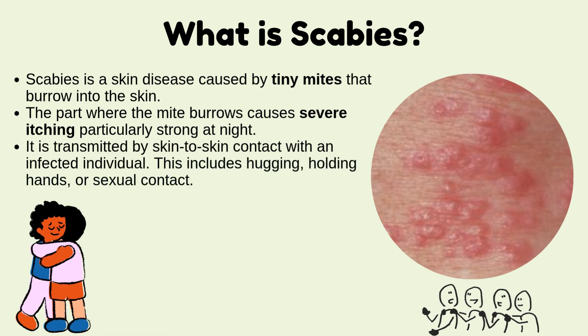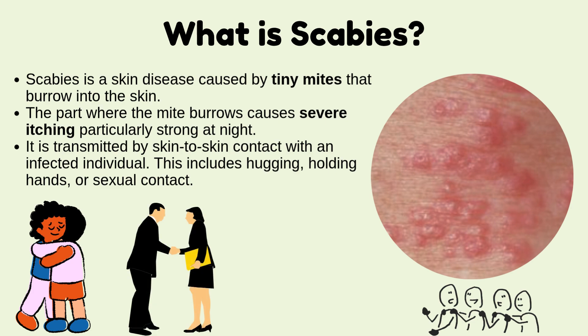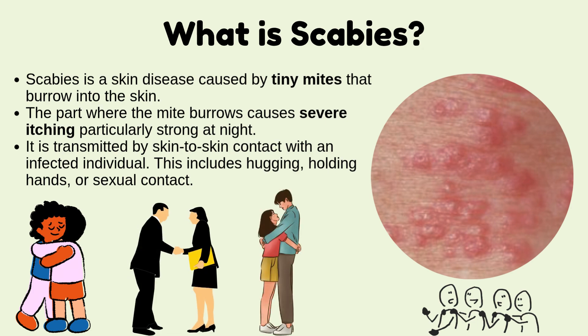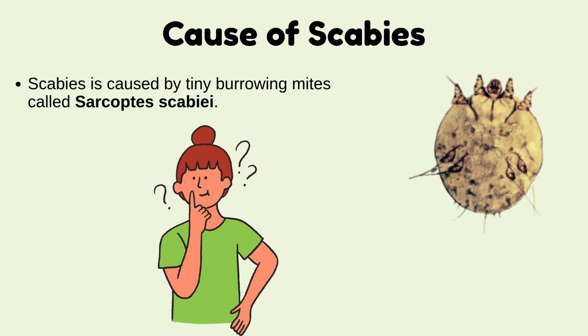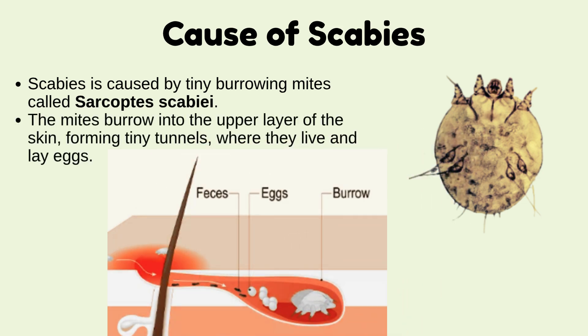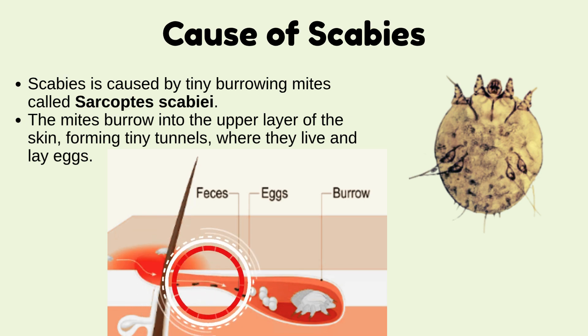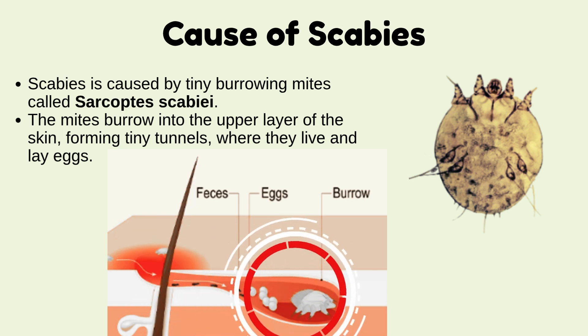This includes hugging, holding hands, or sexual contact. What is the cause of scabies? Scabies is caused by tiny burrowing mites called Sarcoptes scabiae. The mites burrow into the upper layer of the skin, forming tiny tunnels where they live and lay eggs.